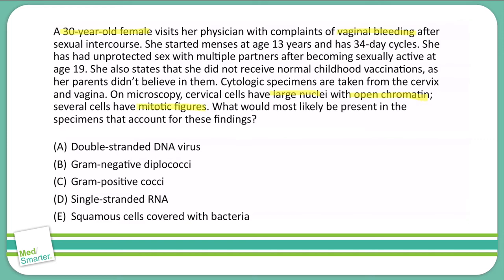So we're looking at cervical cells showing large nuclei, open chromatin, and mitotic figures. This tells us that there is active cell division occurring, and this is likely malignant cell division due to the increased nuclear size and open chromatin.